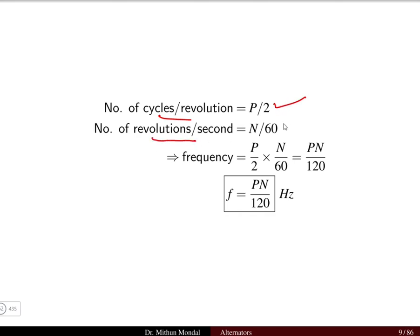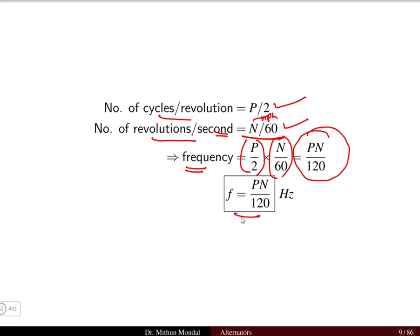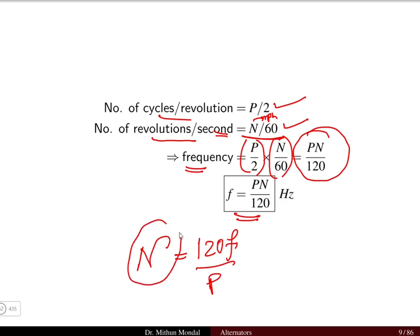The number of revolutions per second is N/60, where N is speed in rpm. Therefore, frequency F = (P/2) × (N/60) = PN/120 hertz. So the speed is N = 120F/P, showing a direct relationship between speed and frequency. When the speed of the rotor increases, the frequency increases proportionally, since the number of poles is fixed by construction.